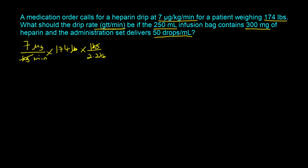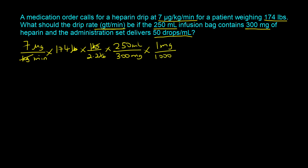Next, we take the volume of the bag, which is 250 milliliters. From the question, that 250 milliliters contains 300 milligrams of heparin. We have a mass quantity in the denominator in milligrams, and a mass quantity in the numerator in micrograms — so we need to make those units consistent before they can cancel. We convert milligrams to micrograms: 1 milligram equals 1,000 micrograms. The milligrams cancel out and the micrograms cancel out.